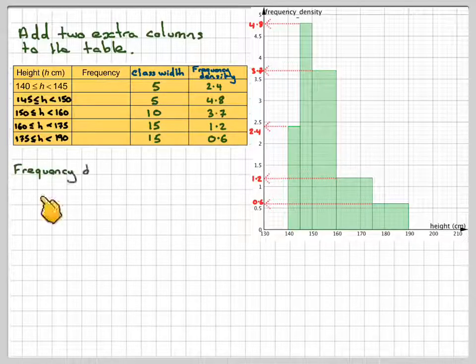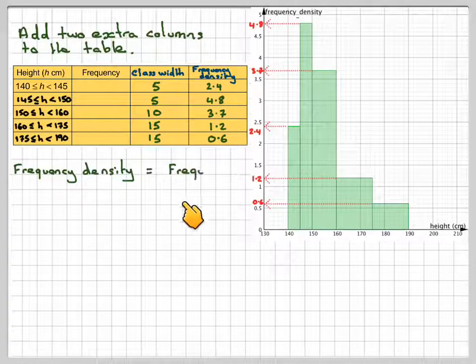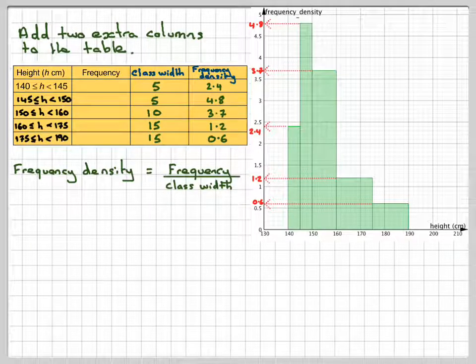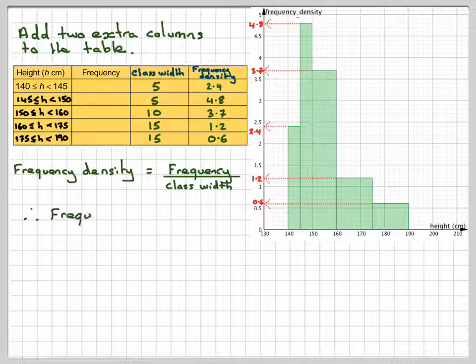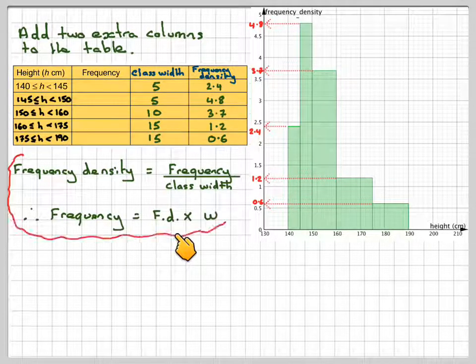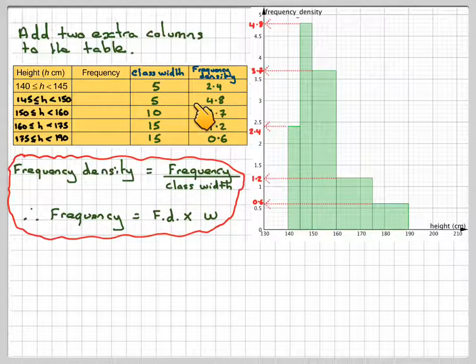Now frequency density equals frequency divided by class width. If we want to find the frequency, then frequency equals frequency density times class width. So we just need to multiply these two columns together.